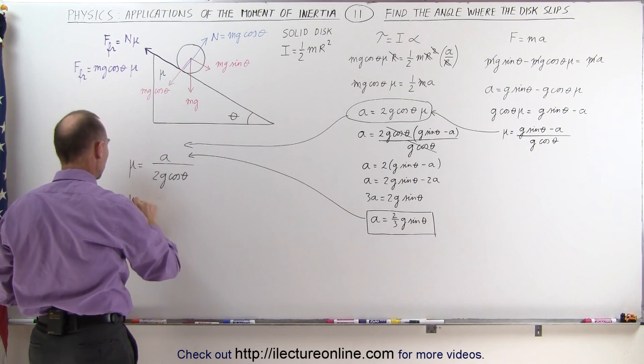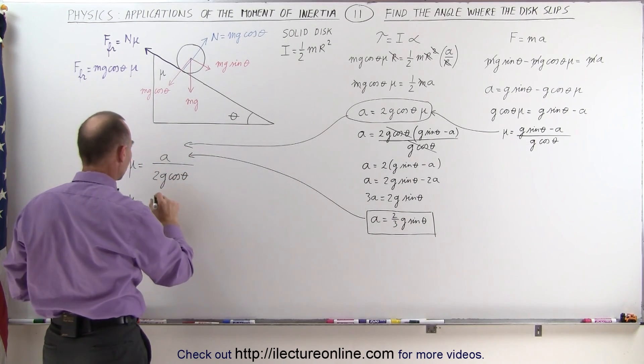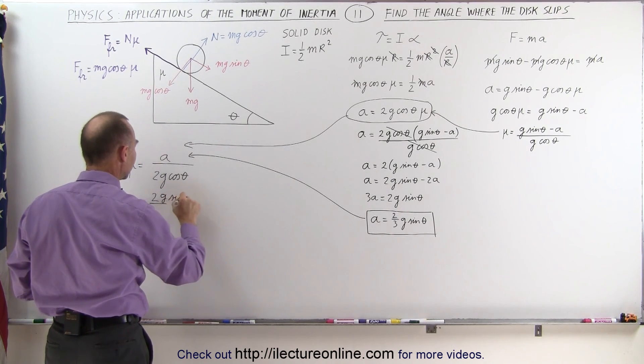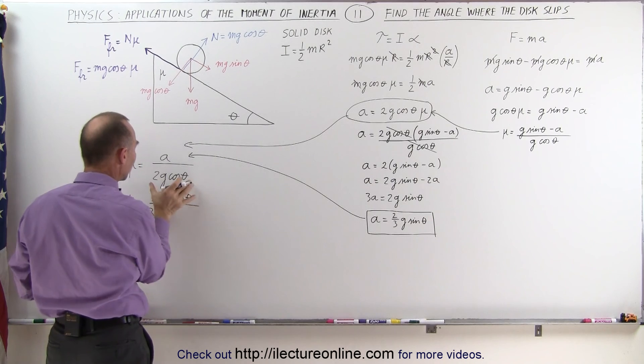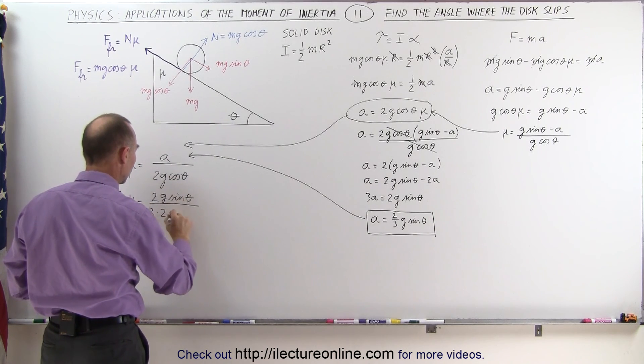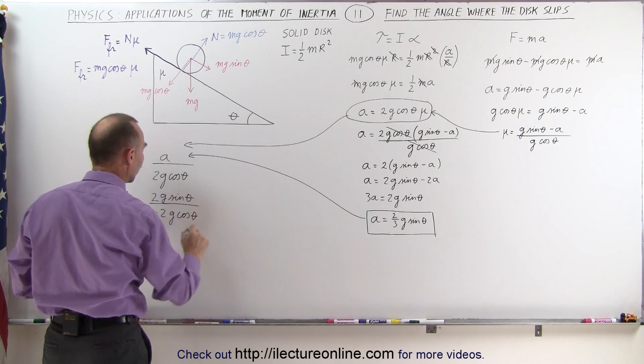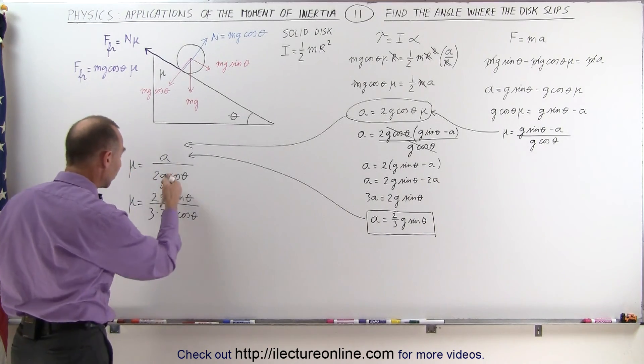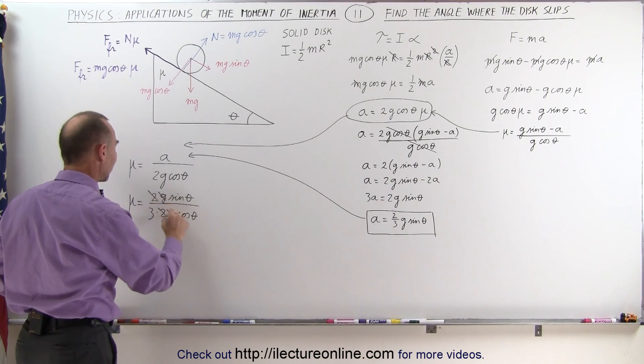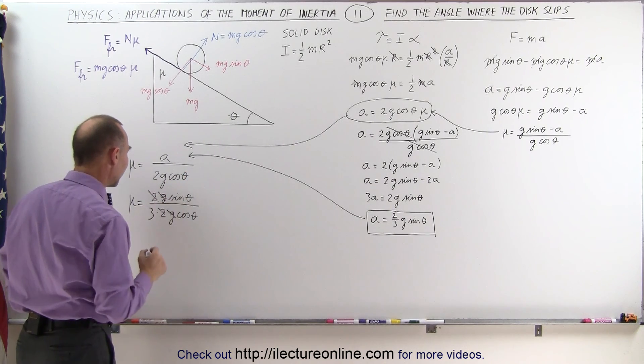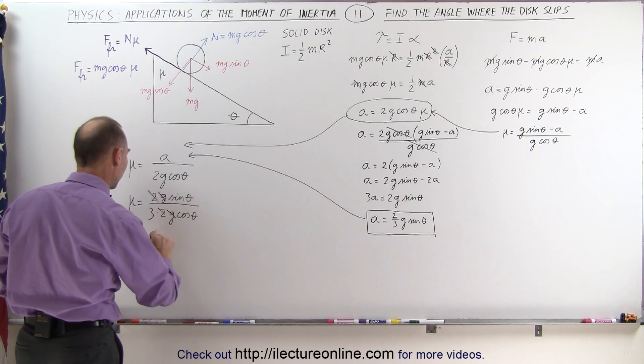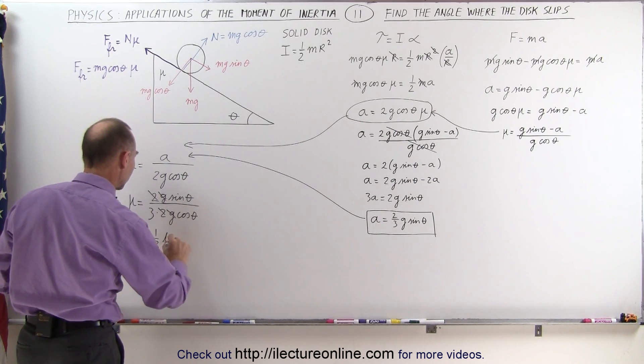And now we can write that mu is equal to the acceleration which is two-thirds g sine theta, so we write that instead of a, and we divide it by 2g cosine theta, which means that mu, the coefficient of friction, is equal to this ratio. The twos cancel out, the g's cancel out, and sine divided by cosine is tangent, which means we have mu is equal to one-third the tangent of theta.